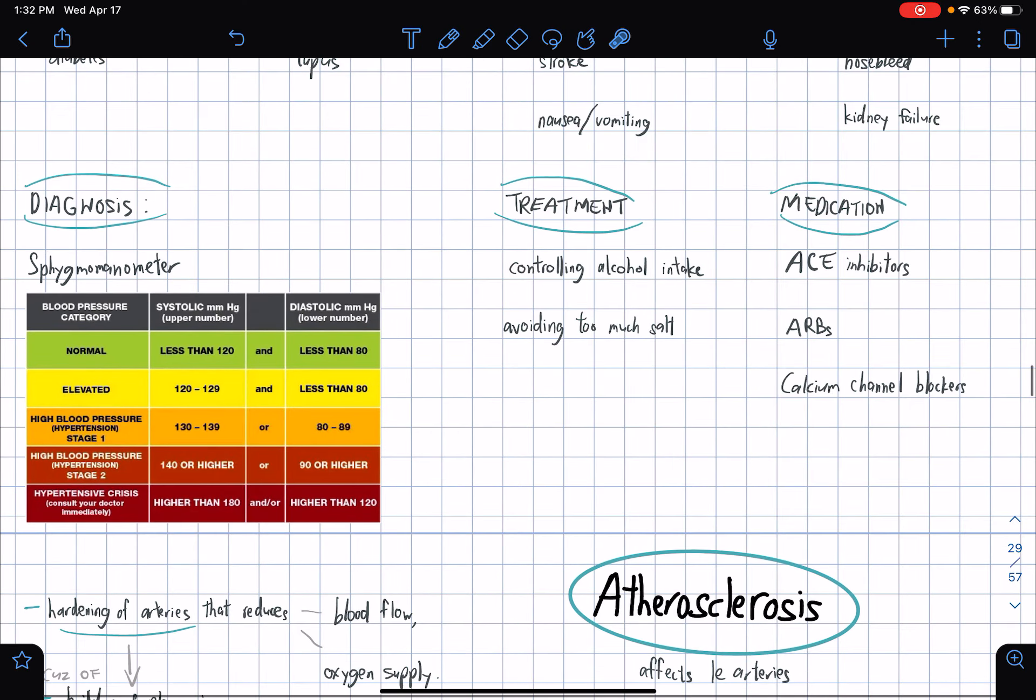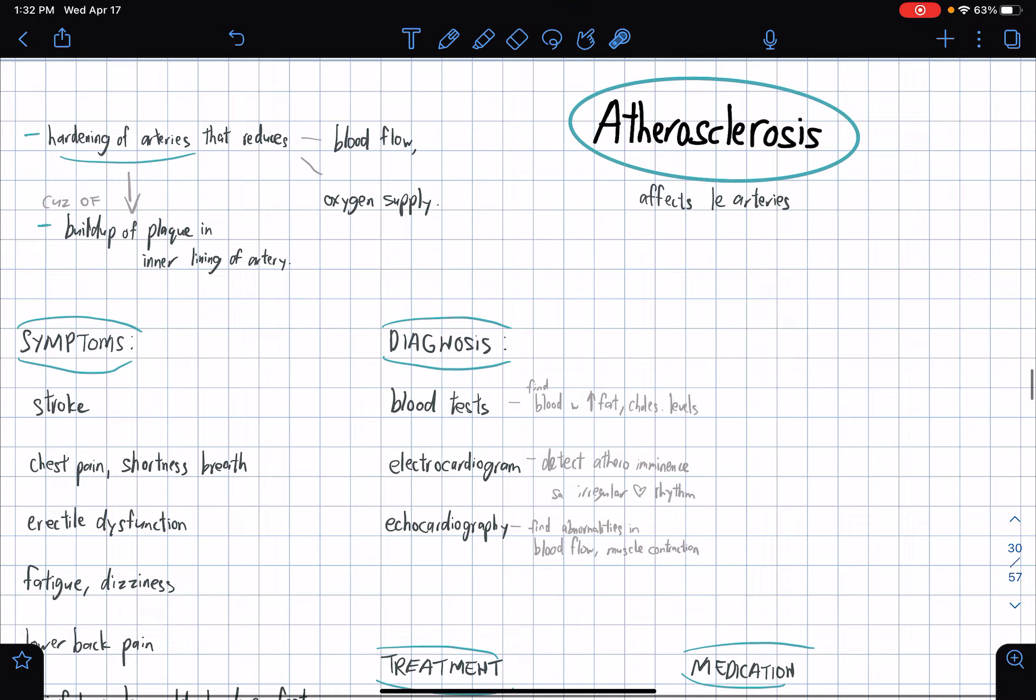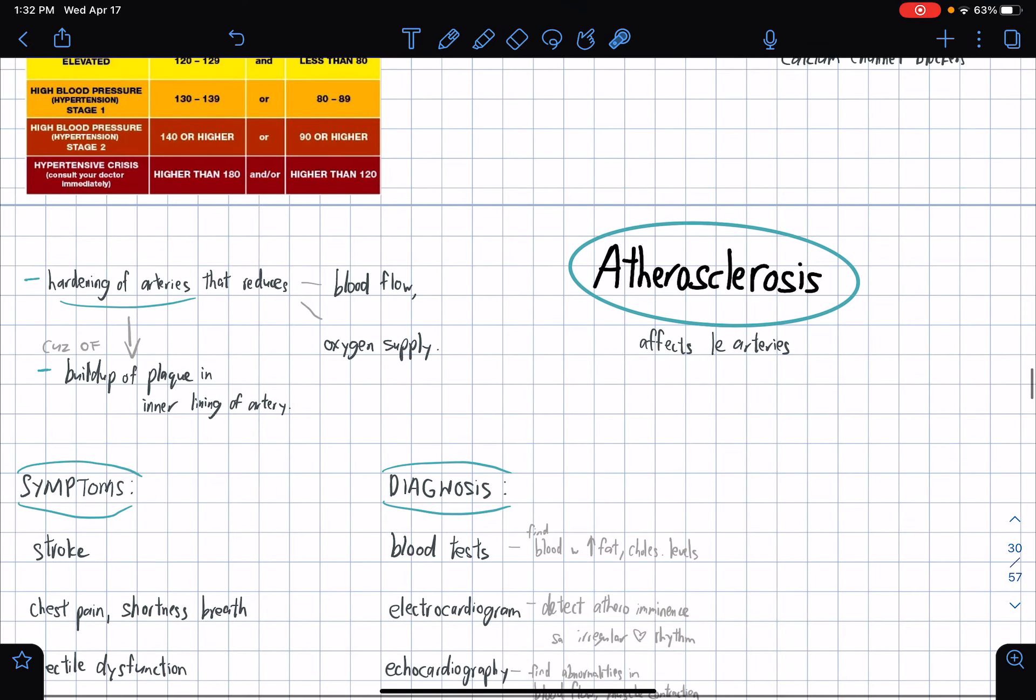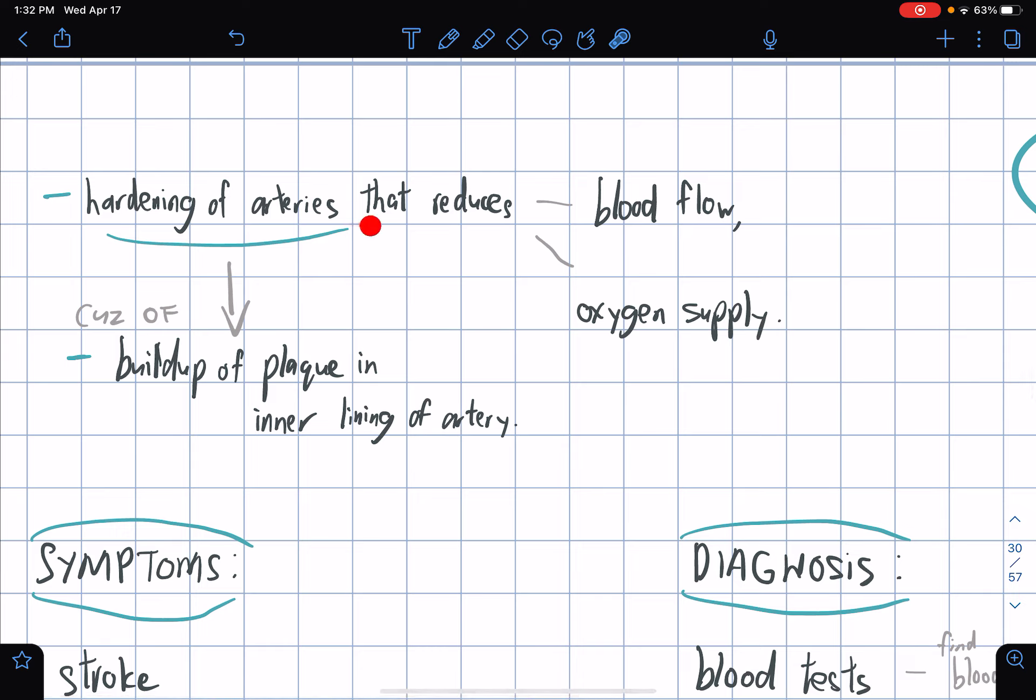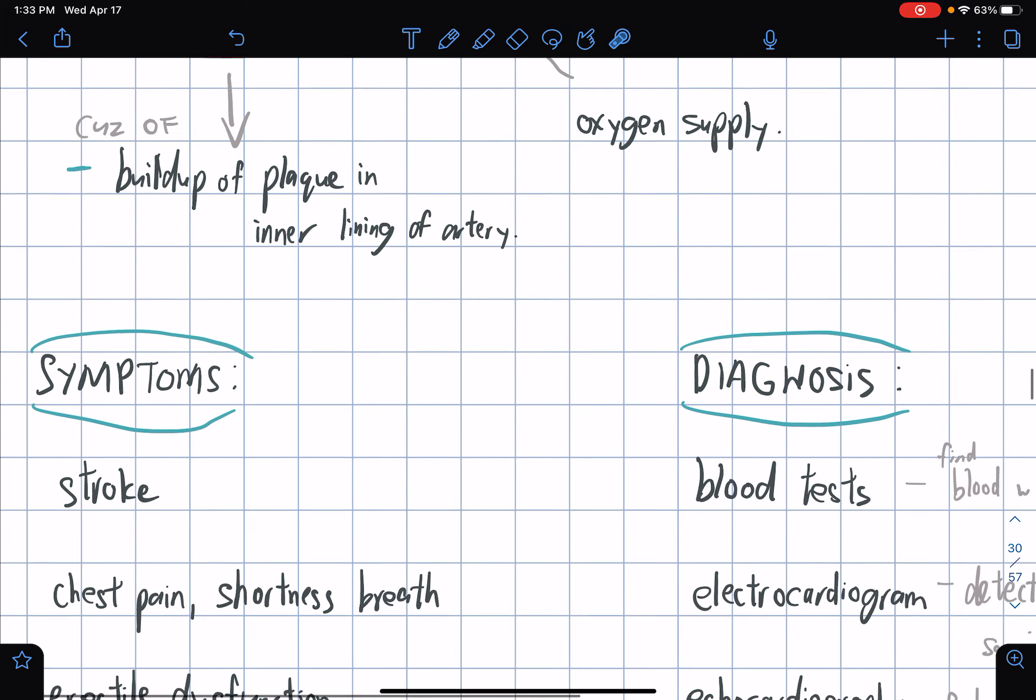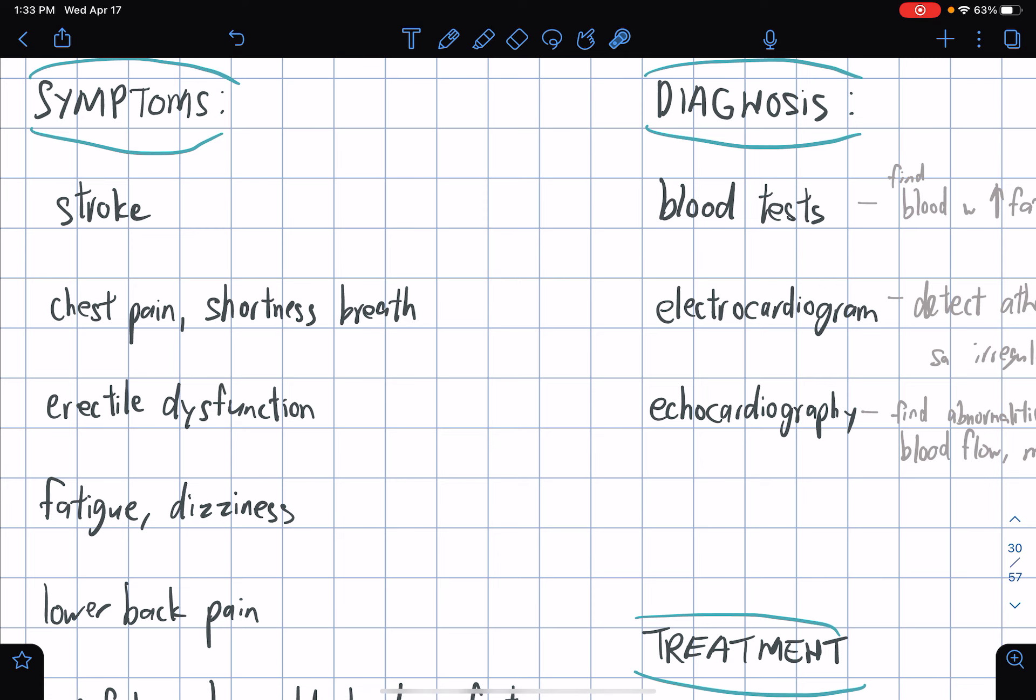Next, atherosclerosis. It primarily affects the arteries. The hardening of the arteries that reduces blood flow and oxygen supply. Ultimately in worst case scenarios, blood flow is impeded significantly. This is due to the buildup of plaque in the inner lining of the artery.